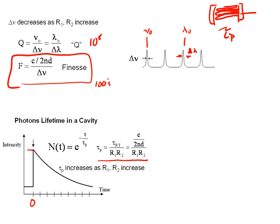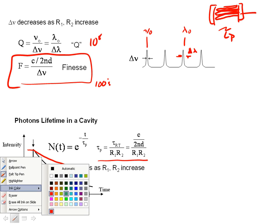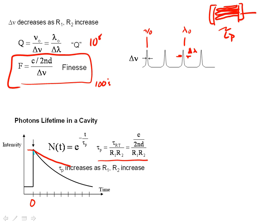What you see here is you increase the reflectivity, the photon lifetime increases, which means for high reflectivity mirrors, our curve's going to look like this. While on the other hand, for low reflectivity mirrors, we're going to have a much shorter lifetime.